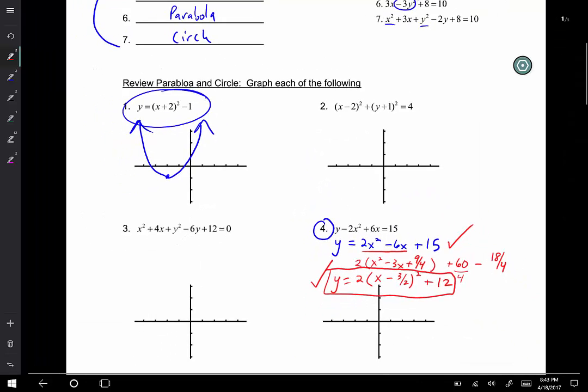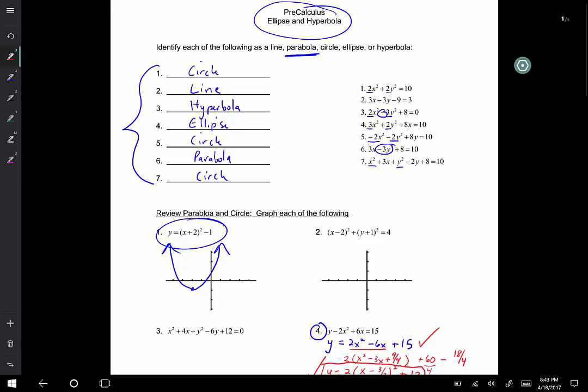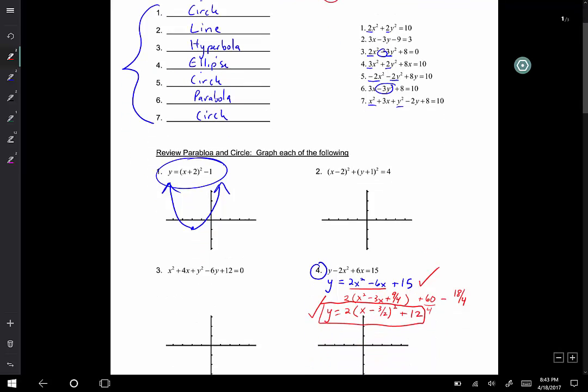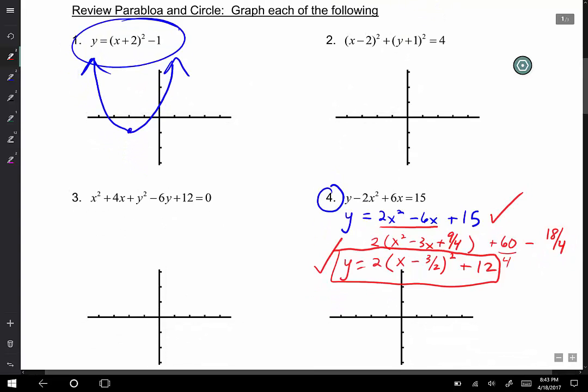Alright, we're back, video number two. Last video was on parabolas, this one's on circles. We're going to look at number two and number three here, the two different types. Number two is very easy because it's in circle form.